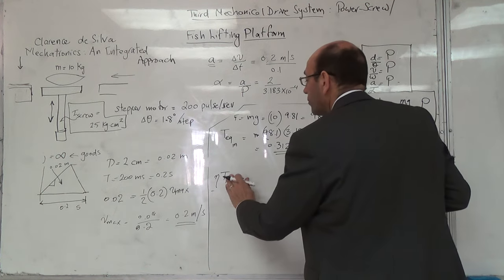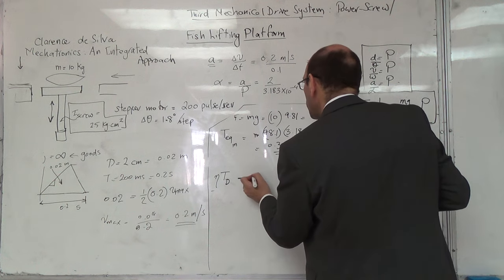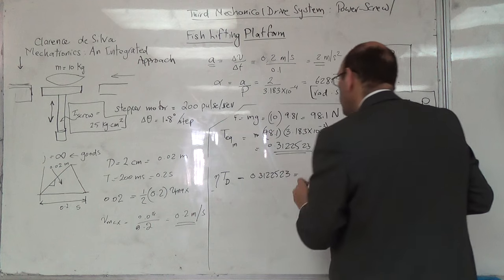What was the torque from the drive? The drive torque minus T equivalent equals 0.3122523, and it equals alpha.